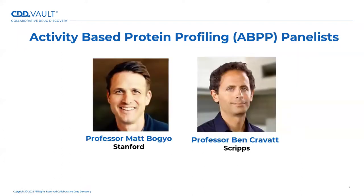I'd like to introduce you to our panelists. Dr. Matt Boijo is a professor of pathology at Stanford Medical School. His interests are focused on the use of chemistry to study the role of proteases in human disease, in particular in tumorigenesis and the life cycle of pathogens. Dr. Ben Cravat is the Gilaula Chair of Chemical Biology and professor in the Department of Chemistry at the Scripps Research Institute. His research group develops and applies chemical proteomic technologies for protein and drug discovery on a global scale and has particular interest in studying biochemical pathways in the nervous system and cancer.